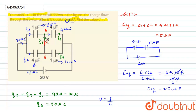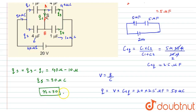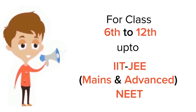The charge flowing through the switch is 30 μC. Since the question states the charge is n micro coulomb, comparing gives us n = 30. This is the required solution.